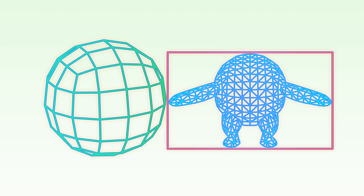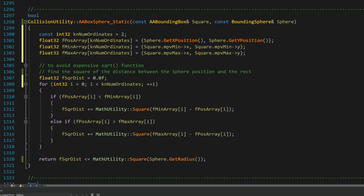If we want to see whether an axis-aligned bounding box is colliding with a sphere, we use an algorithm which is like detecting collision between two spheres.